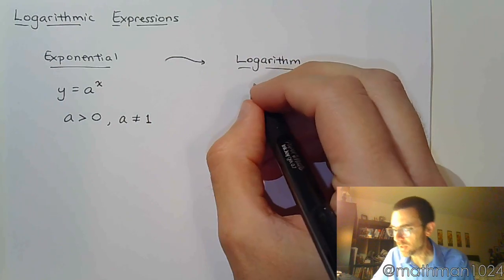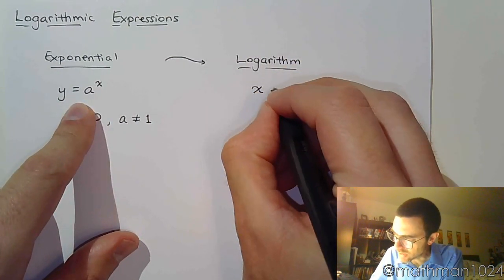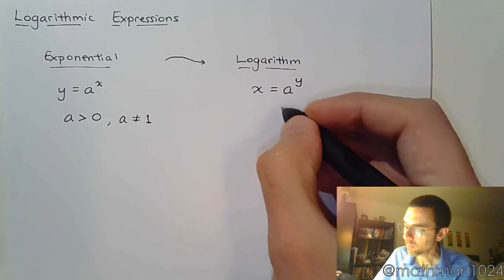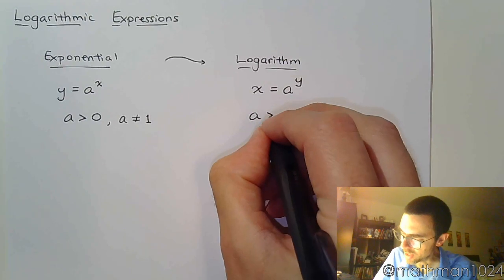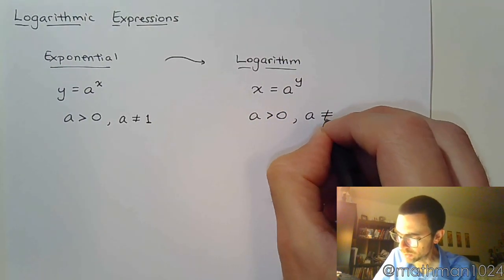And if it's an inverse, that means you swap out the x's and the y's, so it gives you this expression: x equals a to the y. We still have those restrictions that that base has to be positive but not equal to 1.